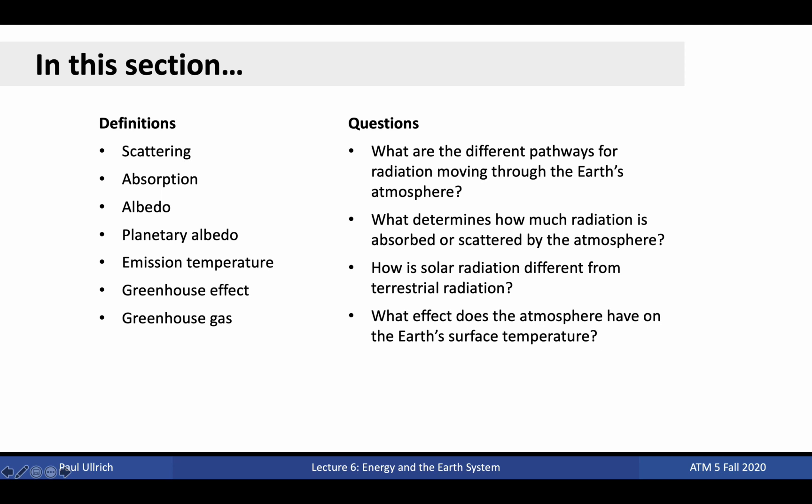The questions we'll be asking are: What are the different pathways for radiation moving through the Earth's atmosphere? What determines how much radiation is absorbed or scattered by the atmosphere? How is solar radiation different from terrestrial radiation? And what effect does the atmosphere have on the Earth's surface temperature?